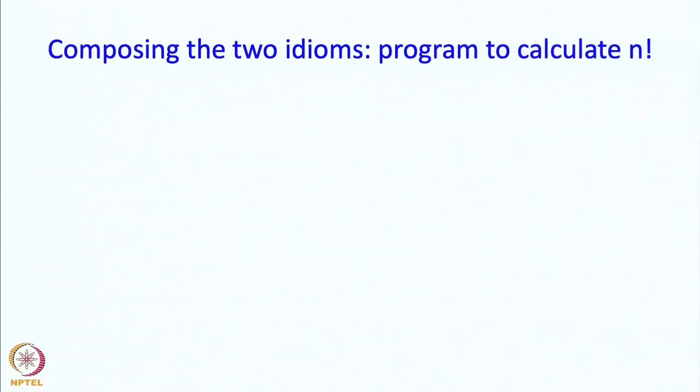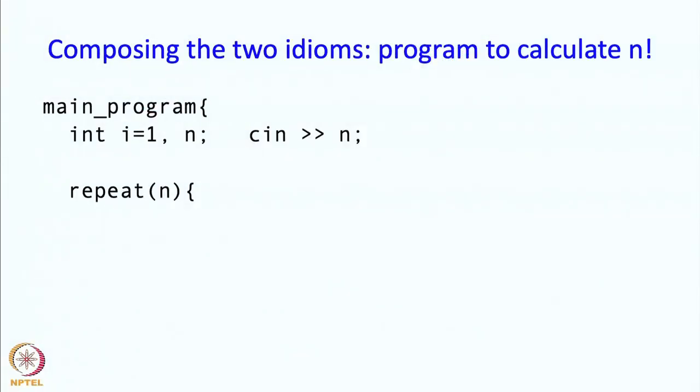Now an interesting thing happens, we can compose these 2 idioms and write a program which calculates n factorial. So here is our basic program. So this is the first idiom, so this is the sequence generation idiom and it is generating the sequence 1 through n.